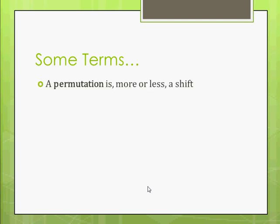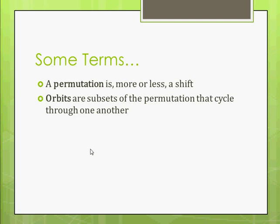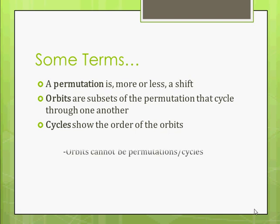So a couple terms. Permutation, once more, is more or less a shift of numbers in some way. Orbits are subsets of the permutation that cycle through one another, and cycles show the order of the orbits. And a couple things to note. Orbits cannot be permutations or cycles. Remember, orbits are subsets. They're not permutations and they don't show order, they're just subsets. That's all they are.